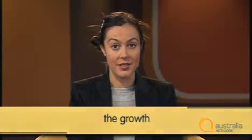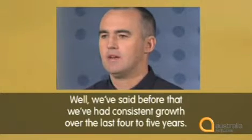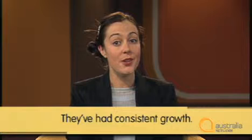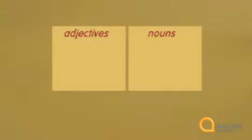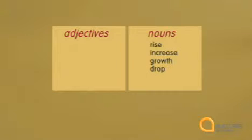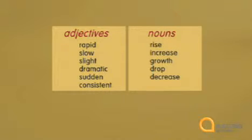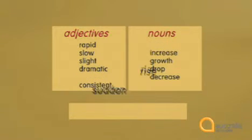For example, you might use nouns like 'the rise,' 'the increase,' or 'the growth.' Listen to Derek again: 'We've had consistent growth over the last four to five years.' He uses an adjective — 'consistent' — with a noun — 'growth.' Let's look at a table. To describe numbers going up, we can use nouns like 'the rise,' 'the increase,' or 'the growth.' To describe numbers going down, we can use 'the drop' or 'the decrease.' Then we've got adjectives to describe those nouns: 'rapid,' 'slow,' 'slight,' 'dramatic,' 'sudden,' or 'consistent.' We can put these together: a sudden rise, a slight decrease, a sudden drop, a consistent growth.